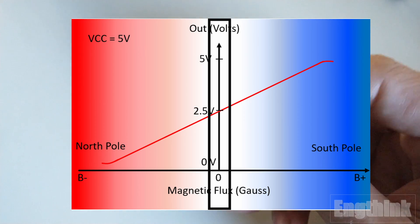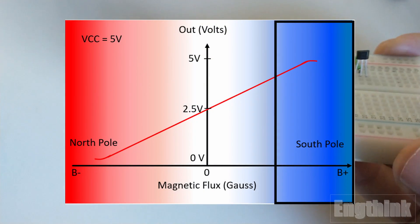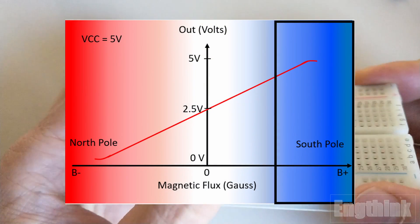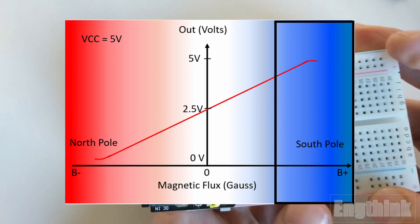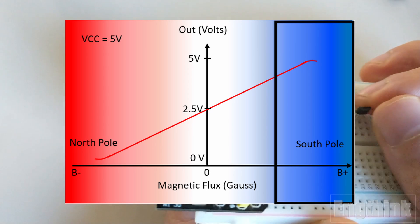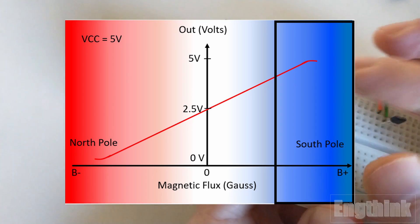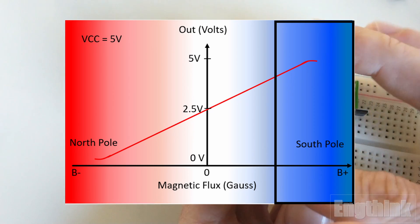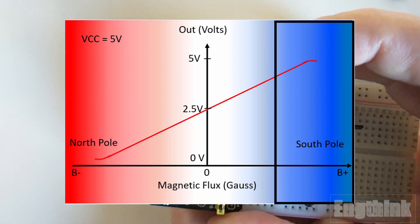Moving to the right part of the graph, we can see the behavior when there is a positive magnetic flux. This flux is generated by a south pole magnetic field. As the magnetic flux increases, there is a corresponding increase in the output until it reaches the limit near the supply voltage that the sensor is using.